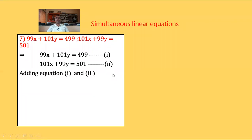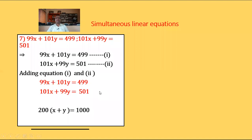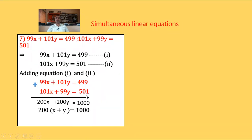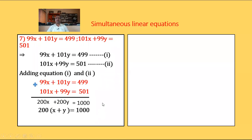Adding equations 1 and 2: 99x plus 101y equals 499, plus 101x plus 99y equals 501. We get 200x plus 200y equals 1000. Taking 200 common on the LHS: 200 times (x plus y) equals 1000. Dividing both sides by 200: x plus y equals 5 — equation number 3.